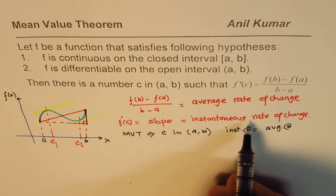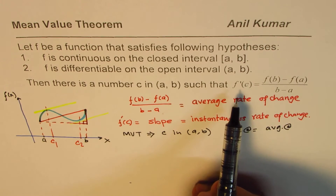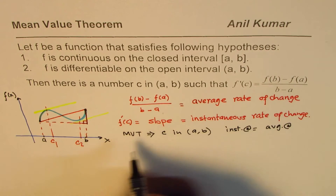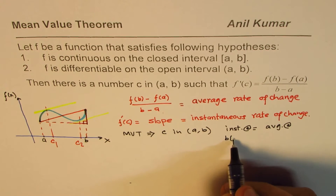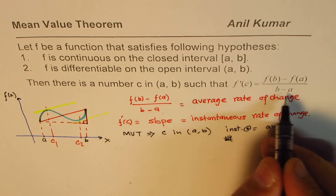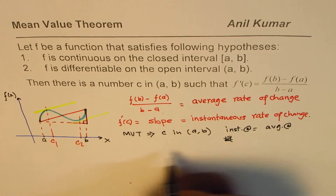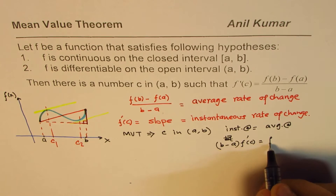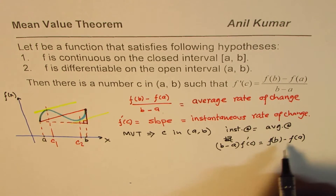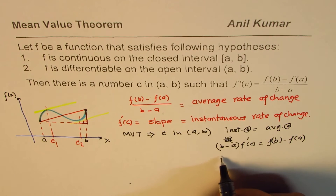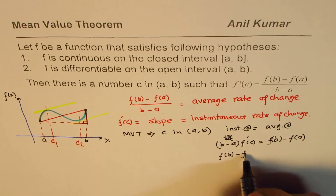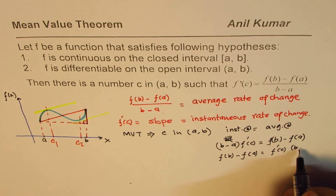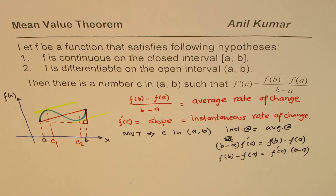This is one interpretation of the Mean Value Theorem — you could link it with average and instantaneous rate of change. At times we also write this equation in a different form. We can cross-multiply to write: (b minus a) times f'(c) equals f(b) minus f(a). Or equivalently, f(b) minus f(a) equals f'(c) times (b minus a). This form gives it a line-equation kind of structure.